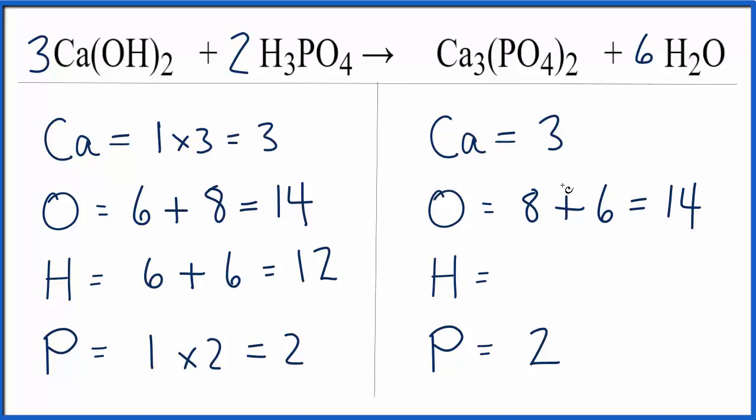And the hydrogens, we know we have the two times the six. That gives us 12 hydrogen atoms. And we're done. We've balanced this equation.